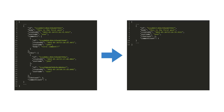By reducing the amount of data sent back from the server, we decrease bandwidth usage and latency. We could add another endpoint that returns just that data, but this becomes a problem as we find ourselves writing more endpoints for every page, drastically increasing backend code. We'd also have to document all those endpoints for front-end developers or anyone consuming the API.